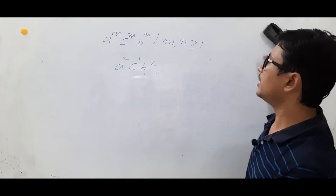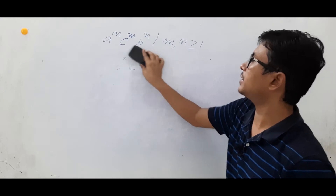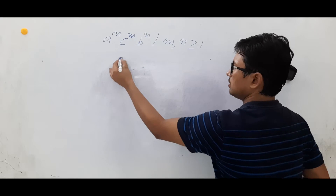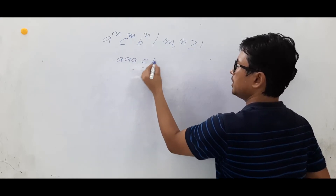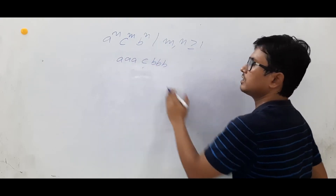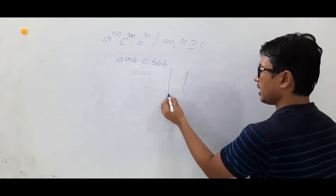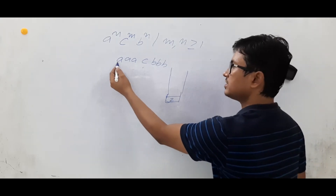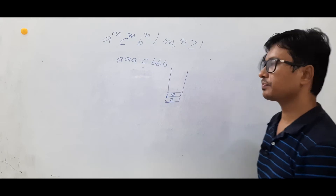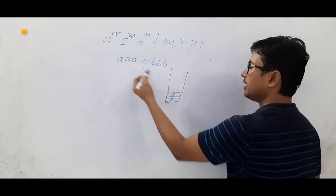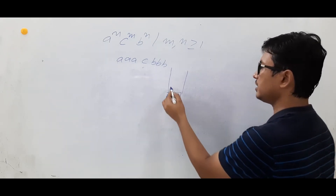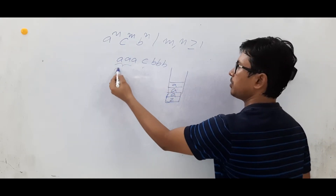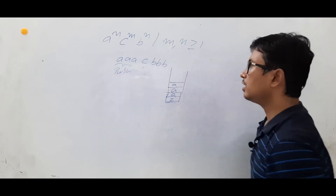So what should we do? Let's take a string: a a c b b. Initially the stack consists of the symbol Z. If I see 'a' with stack symbol Z, I will push 'a'. Similarly, 'a' on stack symbol 'a' means I will push it. So for all the a's, I perform the push operation.